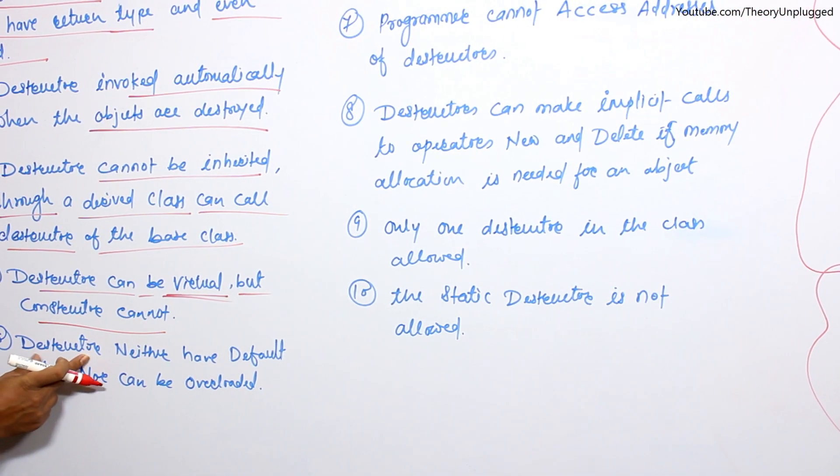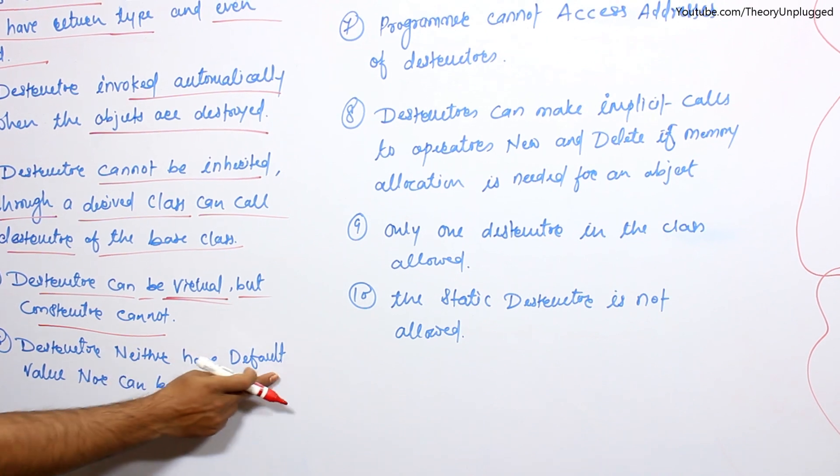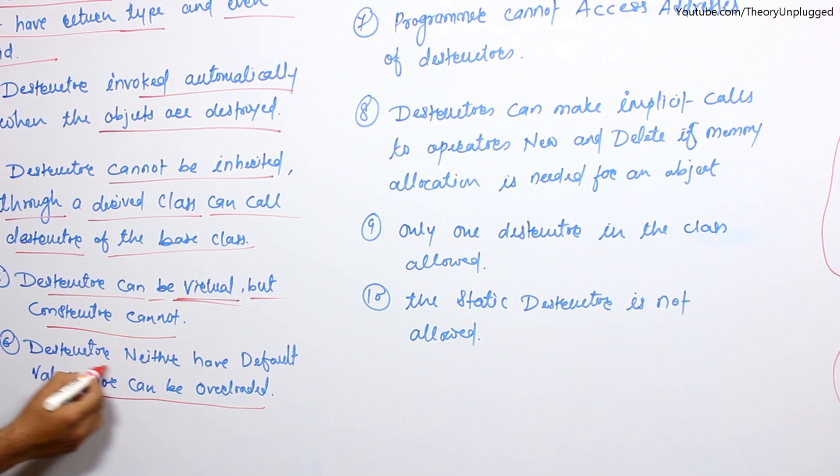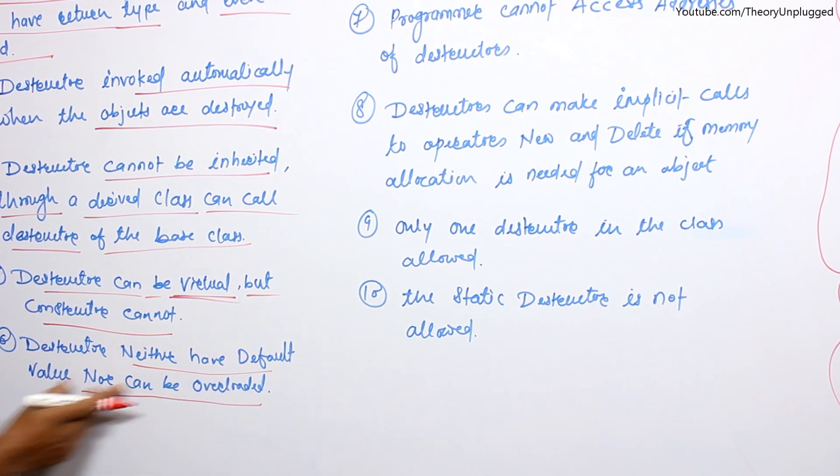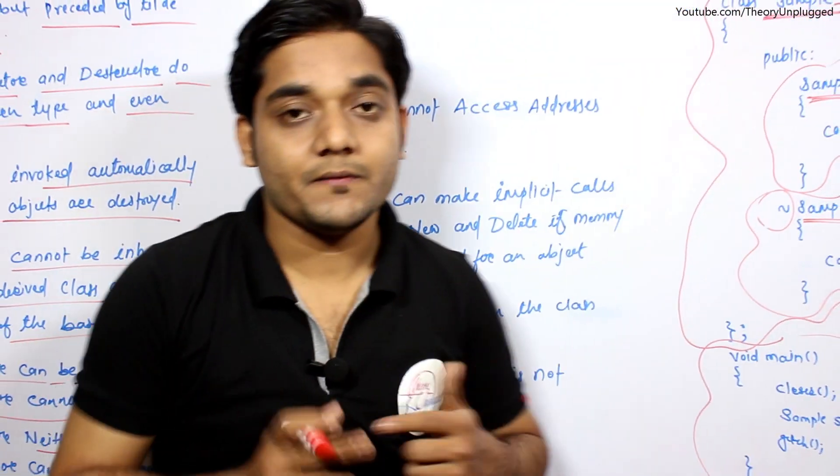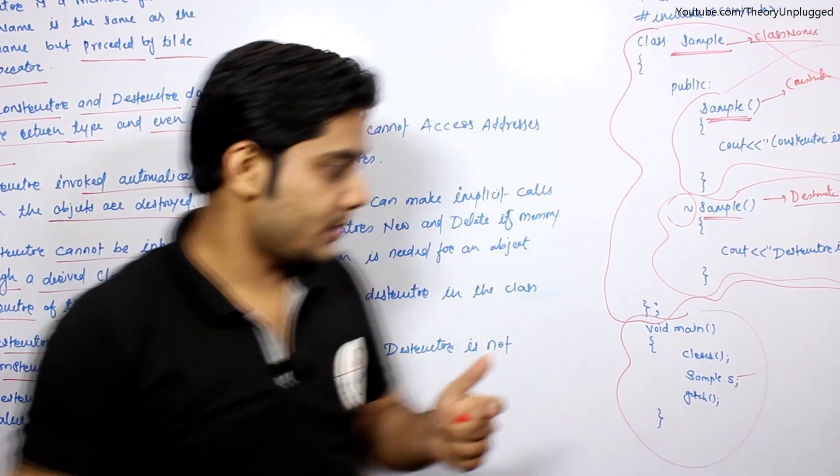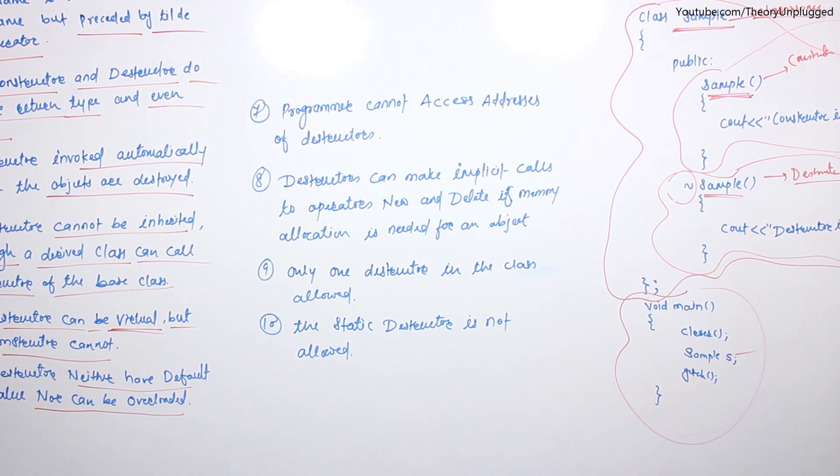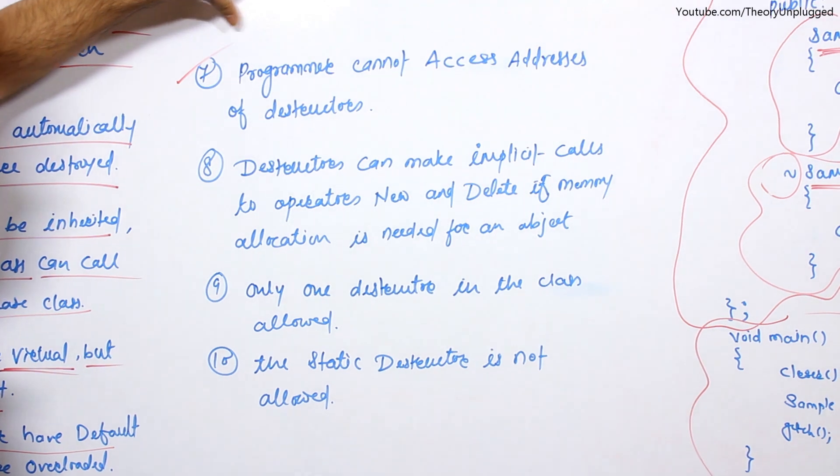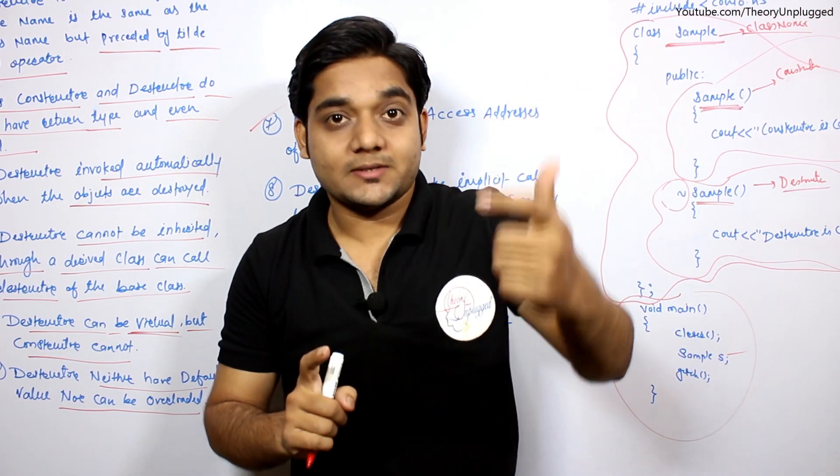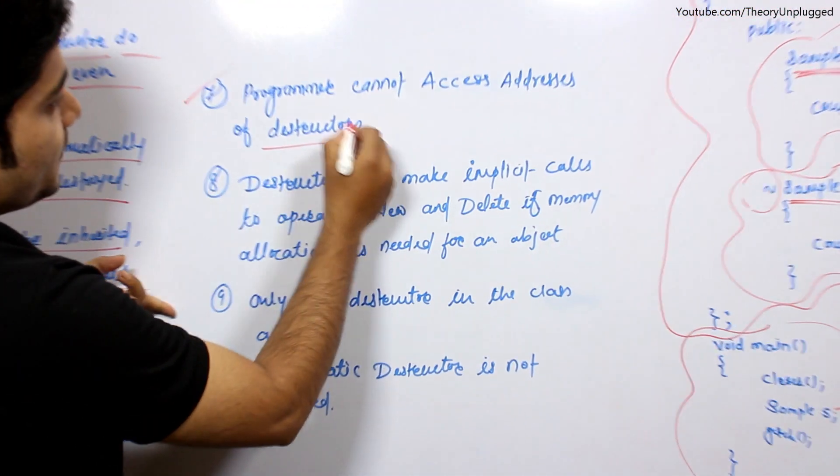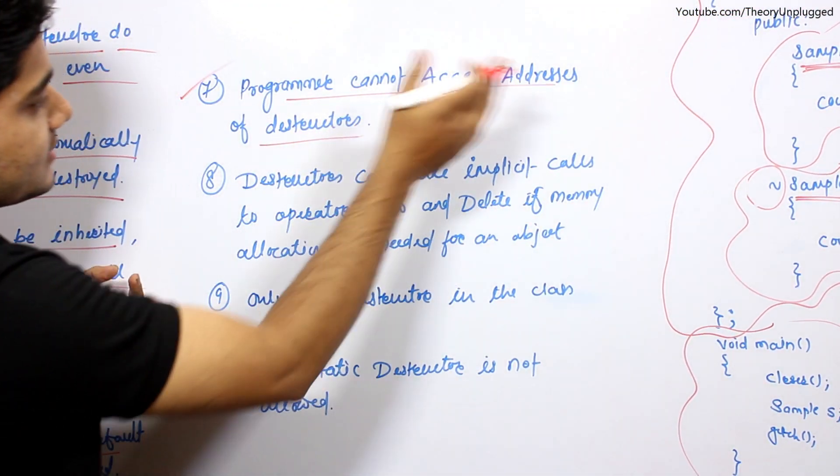Sixth point: destructor neither has default value nor can be overloaded. Destructor will be neither default nor overloaded. Seventh point: programmer cannot access the address of destructor.